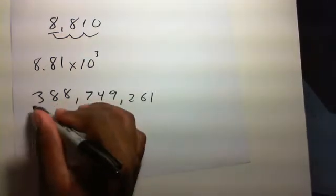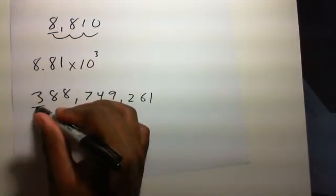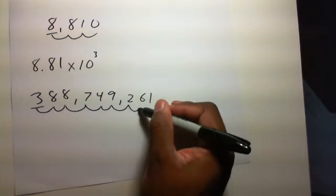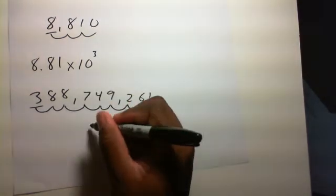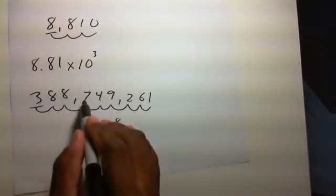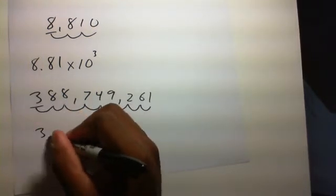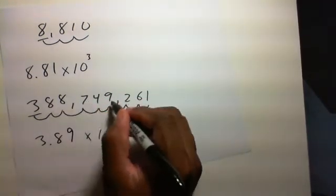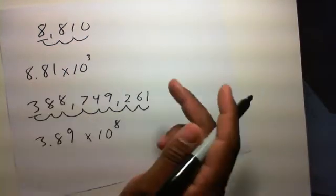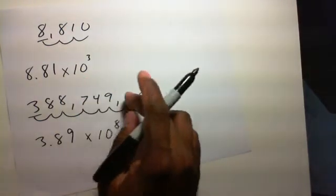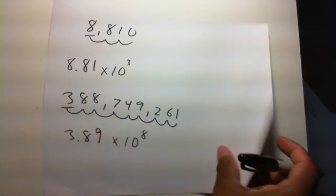Let's try another one. Use the same rules. Leftmost non-zero digit and you move it. 1, 2, 3, 4, 5, 6, 7, 8. So we know it's going to be 10 to the 8th. And instead of just using these three digits, you see there's a 7 here. So you're going to need to round up. So it's going to be 3.9 because you have to round up. There's some digits after that.